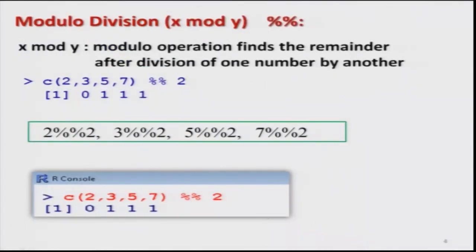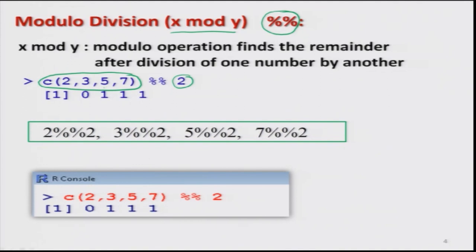Similarly, for modulo division — written as x mod y in mathematics — the notation in R is the double percentage sign (%%). Modulo division finds out the remainder after division. For example, I take 4 values 2, 3, 5, and 7 combined in a vector and operate modulo division with respect to 2. Each of these values — 2, 3, 5, and 7 — is modulo-divided by 2.